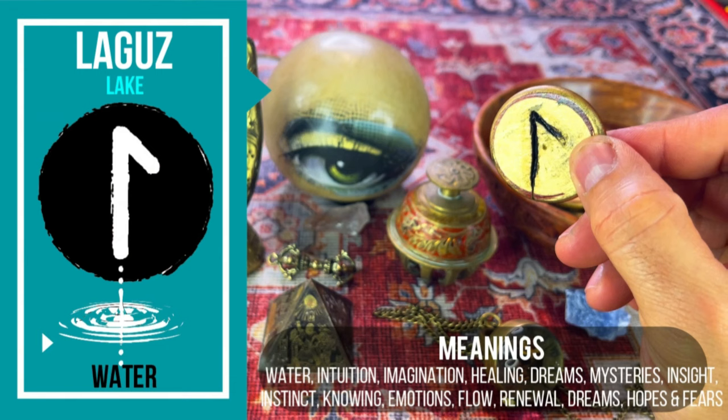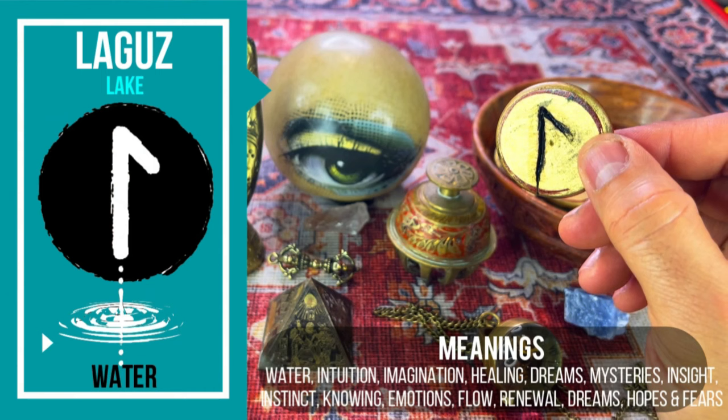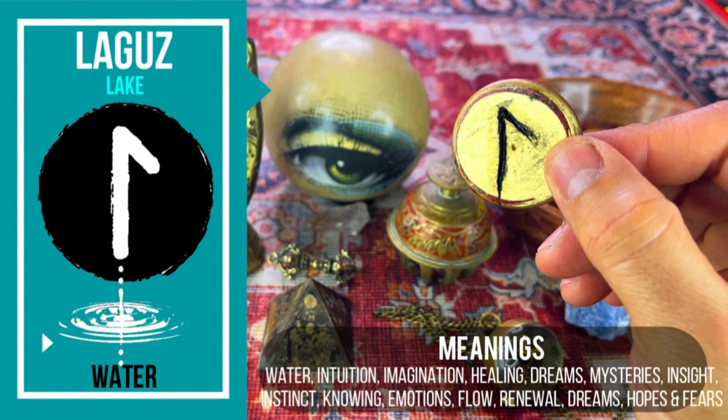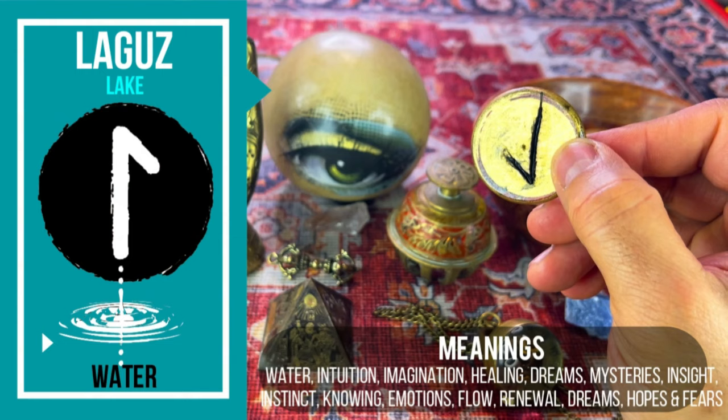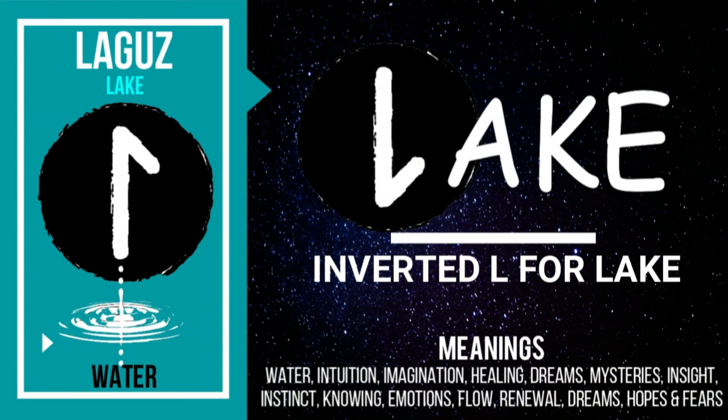21. Laguz. The Laguz rune is often associated with water, which is a symbol of emotions, dreams, intuition, and the unconscious mind. It indicates a healing power of renewal, heightened imagination, and psychic abilities. It can also relate to mysteries, secrets, the unknown, and the underworld. Reversed, it can point to fear, misjudgment, or disconnection from your inner self and your intuition. Think of this symbol as an inverted L for lake.